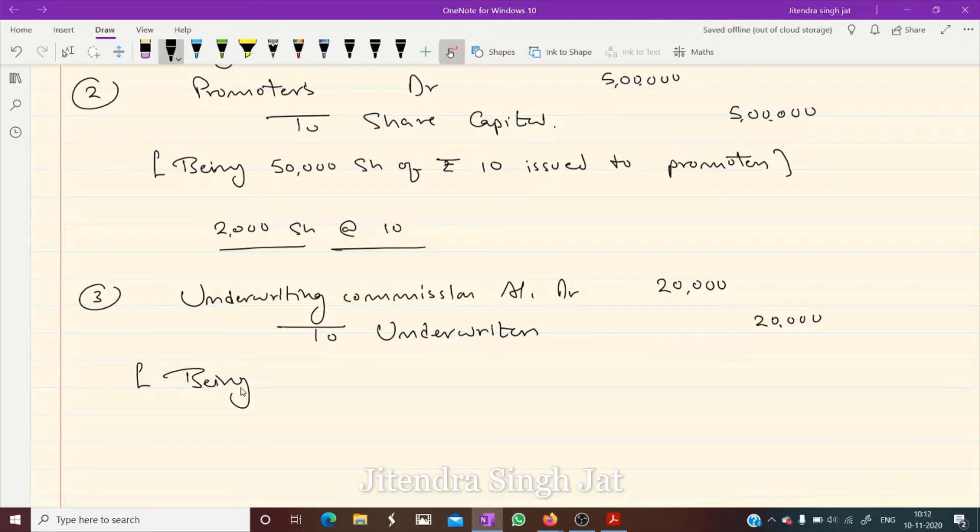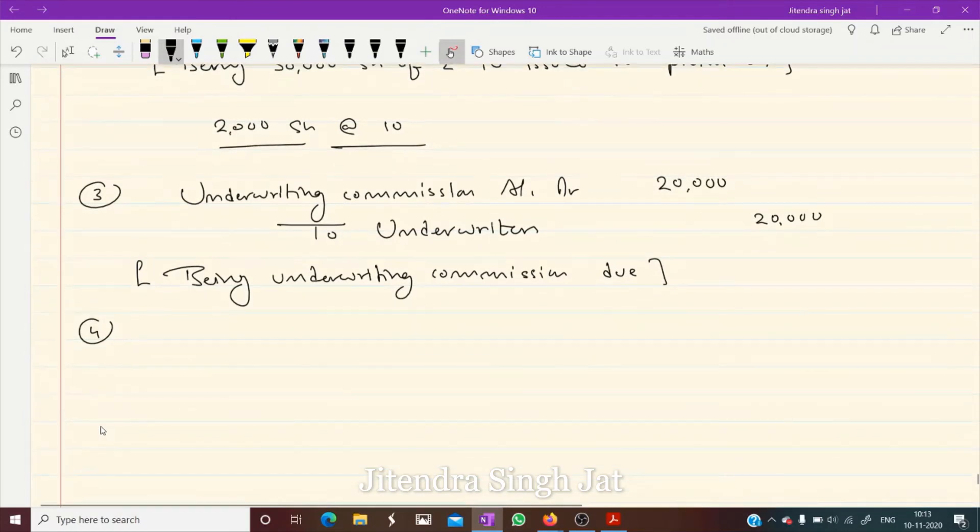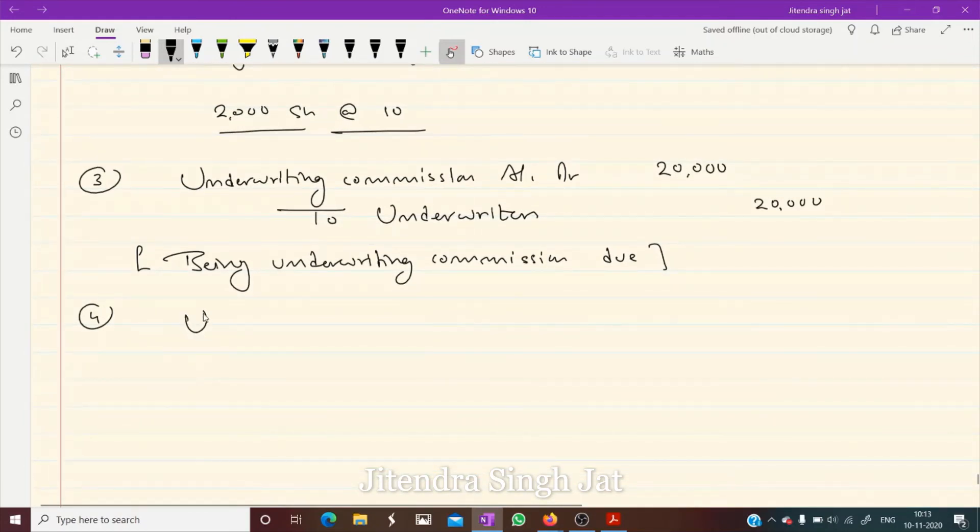Being underwriting commission, being underwriting commission due. Now it is to be repaid, but what we are doing? Company issuing shares to underwriters. So underwriters debit to share capital. 2,000 multiplied by 10 means 20,000.